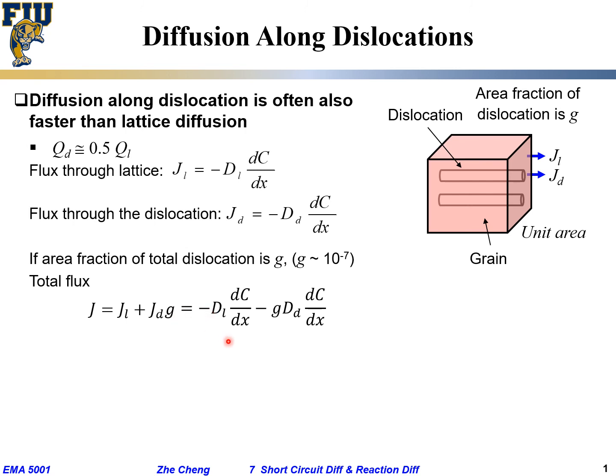Replace the JL term with Fick's first law, replace the JD term also with Fick's first law. DL is the diffusion coefficient along lattice, and DD is the diffusion coefficient along dislocation.